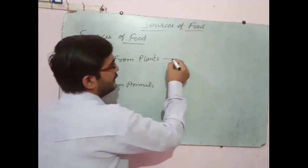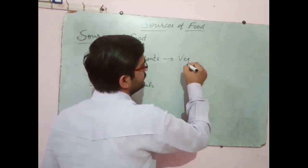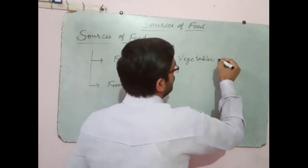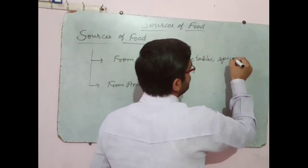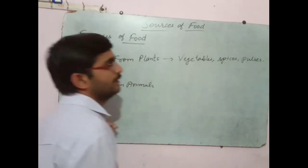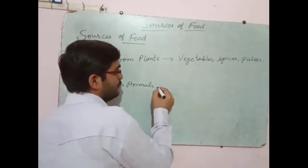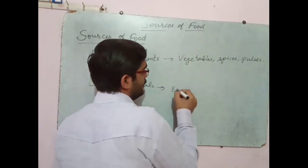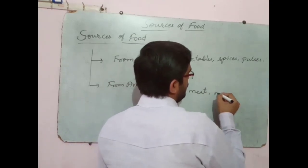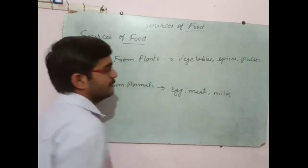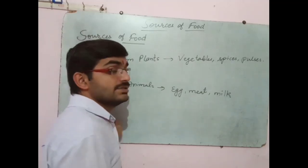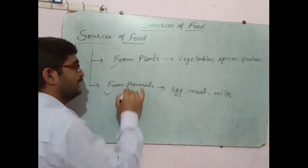From plants, what do we get? We get vegetables, spices, pulses, etc. And from animals we get eggs, meat, and milk. These are the sources of food from plants and from animals.